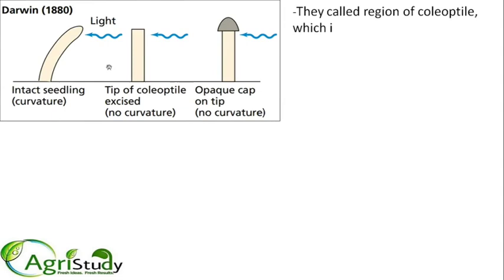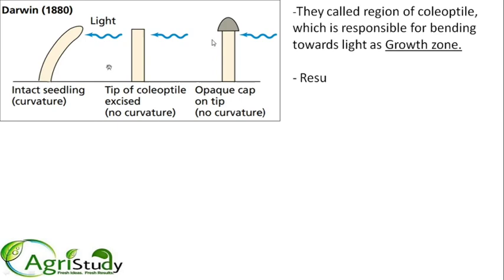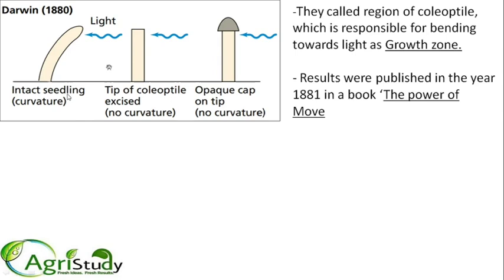See in this image — when the light is exposed, the intact seedling bends towards the blue light, showing normal curvature. When this coleoptile tip is removed, they observed no curvature. And when an opaque cap is placed on the tip, blocking the stimulus, there will also be no curvature.